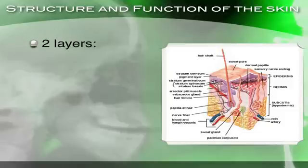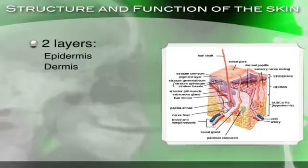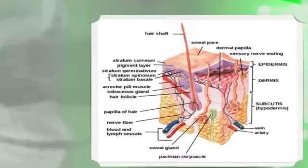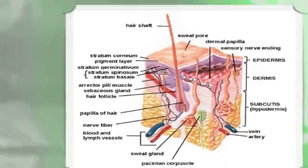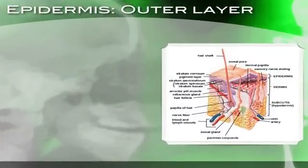There are two layers to the skin. We have the outer layer, which we call the epidermis, and we have the inner layer, which we call the dermis. Looking at this figure on the screen, here's the epidermis as the outside layer, and we have this thicker layer that is the dermis. We're going to talk about the structure of those two and the functions of the different parts.